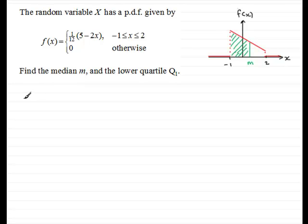And to get that area we need to integrate f(x) with respect to x going from the lower limit, which in this case is minus one, up to the median m. So what we've got here is that one twelfth of the integral of (5 - 2x). I've put the one twelfth on the outside because it makes the integral easier. So we've got the integral of f(x) dx going from minus one up to m, and that's going to equal a half. We've got to solve this for m.